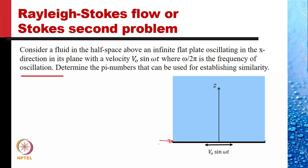Because of the no-slip condition, the fluid adjacent to the plate starts moving, and as it moves, it causes shear stress on the adjacent fluid. The effect of the plate's movement penetrates upward. But soon the direction of motion changes and everything reverses. Because of this, at any given time, the effect of the motion of the plate does not penetrate more than a fixed distance. We need to determine the extent of the region of fluid near the plate that is affected by its motion.